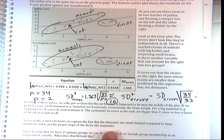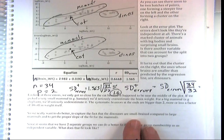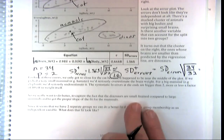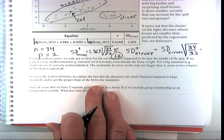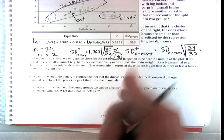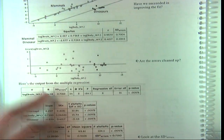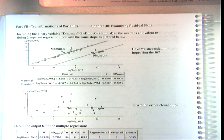We really want to do better to capture the fact that dinosaurs have small brains compared to large mammals, so we want to get the proper slope fit for the mammals. We can do a lot better. So what would we do? We'd add dinos. We're going to include this binary variable — dinosaur.